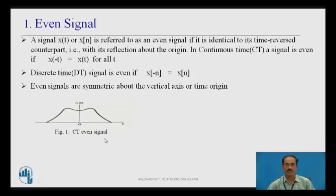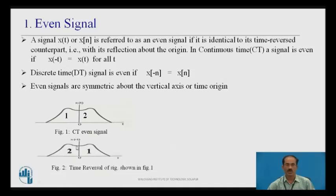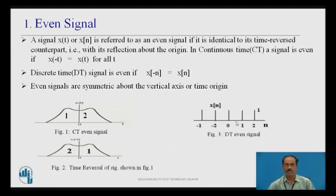x(t) is an even signal. If you take x(-t), the time reversal or mirror image of this signal, both must be the same. This is x(-t), and these two signals are the same, so the given signal is an even signal. This is an example for a discrete time even signal.